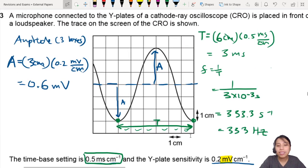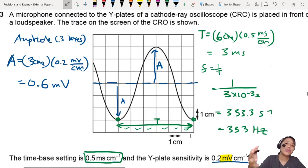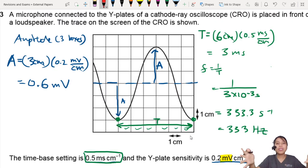Make sure you know how to read CROs. The important thing is what you do with the setting. There's two settings. One control the horizontal, one control the vertical. And they tell you how much each box is. That's all for this question. I will see you in the next one.